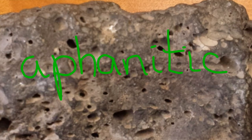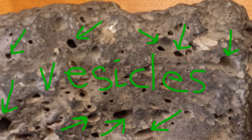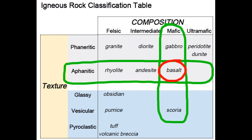This sample is also affinitic, fine-grained. However, this rock exhibits holes. The technical term for these holes is vesicles. The vesicles represent cavities in which bubbles of vapor were trapped during solidification of the liquid lava. We name the rock for what it's mostly made of, so the name of this mafic, affinitic rock is a basalt. Because of the presence of vesicles, however, we add the adjective vesicular. So the entire rock name becomes vesicular basalt.